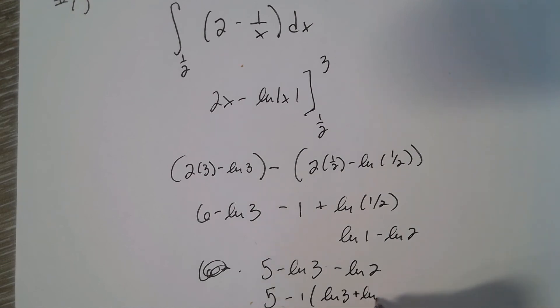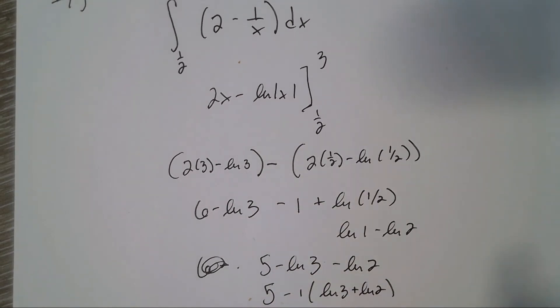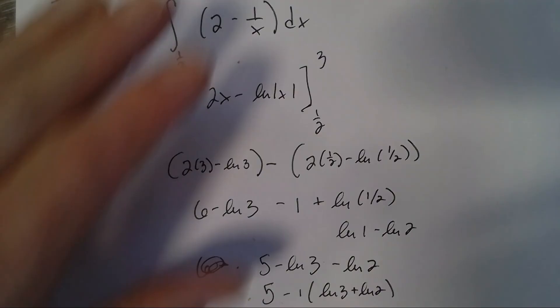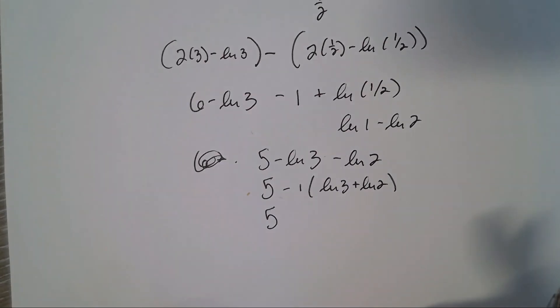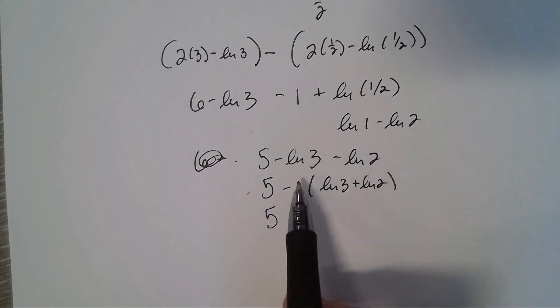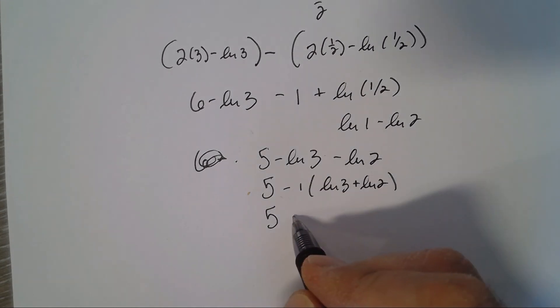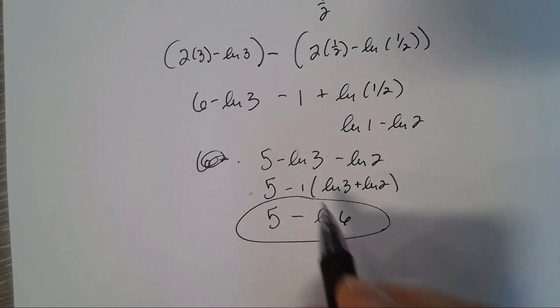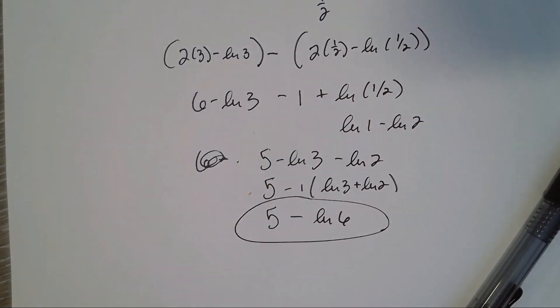So the final answer is 5 minus natural log of 6, which is probably what the book has for an answer.